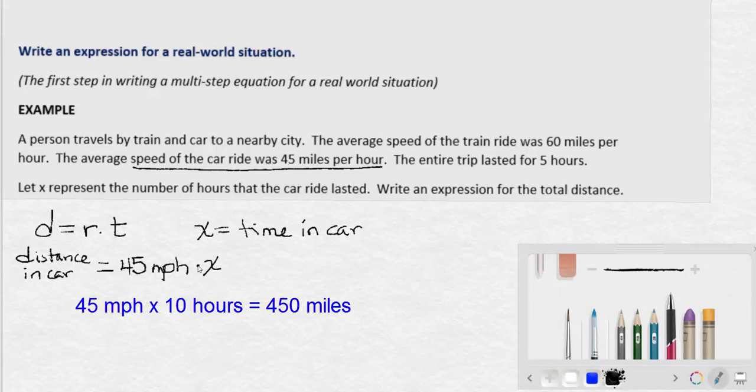For example, if we travel at 45 mph for 10 hours, we're going to go 450 miles.